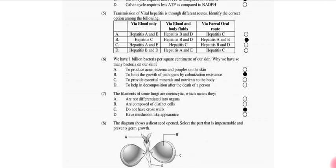We have 1 billion bacteria per square centimeter of our skin. Why do we have so many bacteria on our skin? To limit the growth of pathogens by colonization resistance. The filament of some fungi are coenocytic, which means they don't have cross walls.